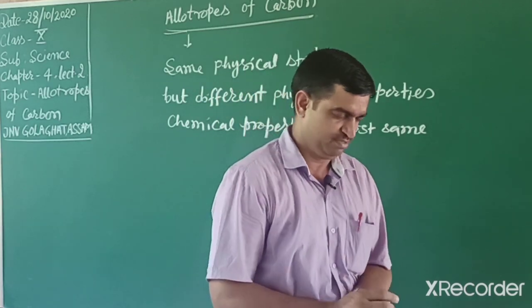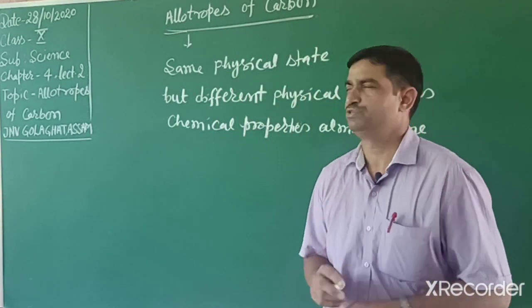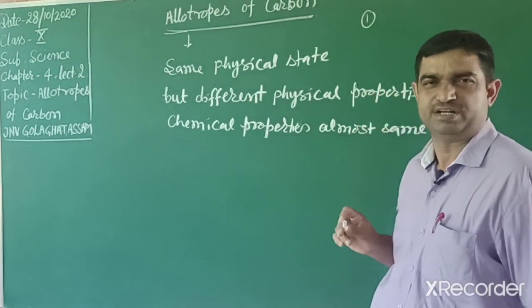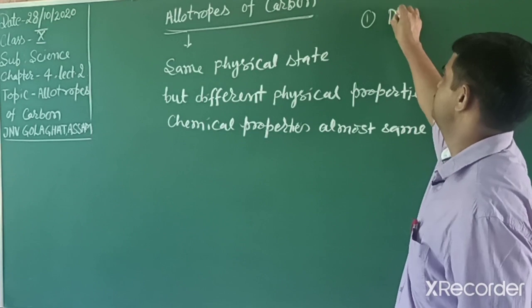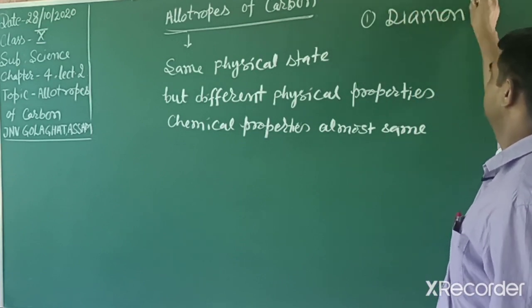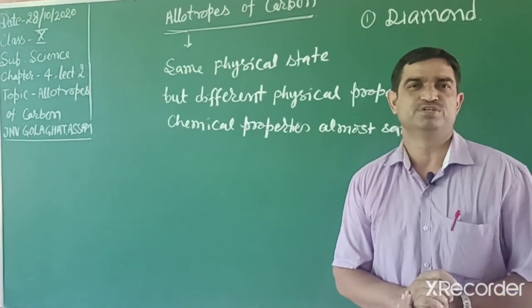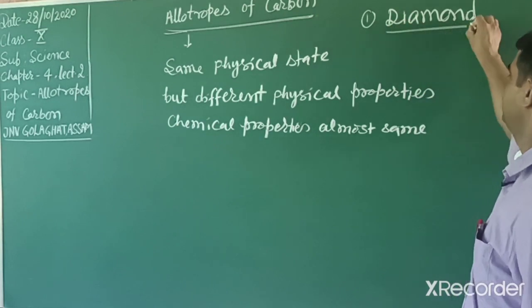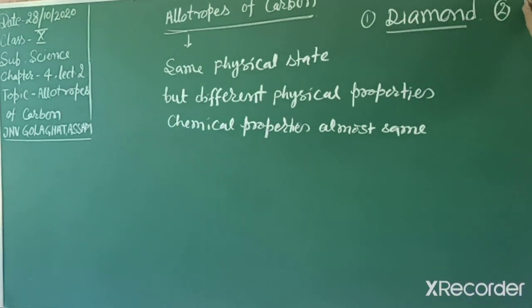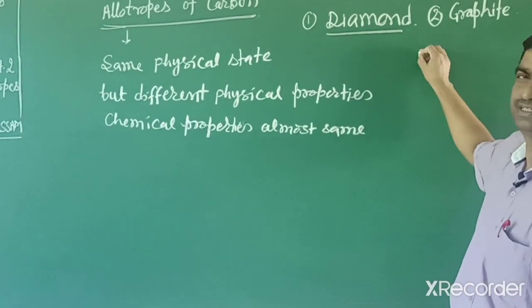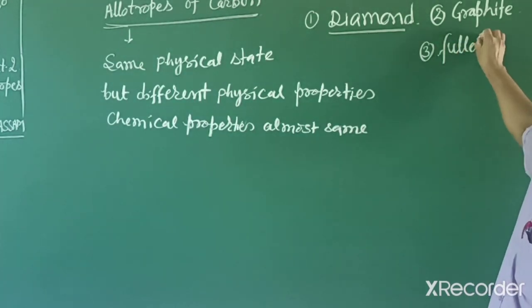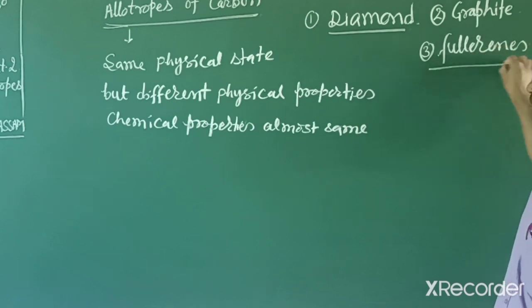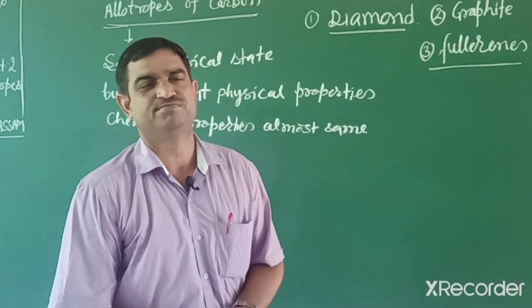Carbon shows three allotropes: one is diamond, another is graphite, and the third is fullerene. We already studied diamond in lower classes. Diamond is the hardest substance with the highest melting point. We will now discuss the structure of diamond, graphite, and fullerene in detail.